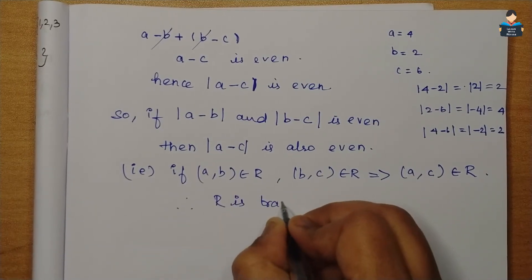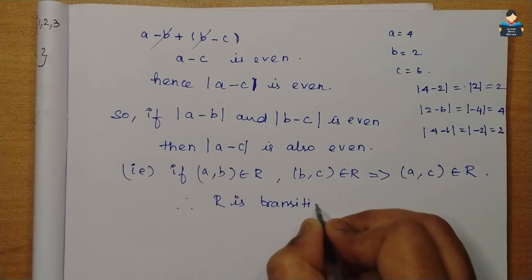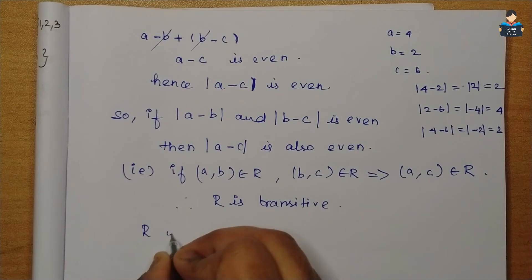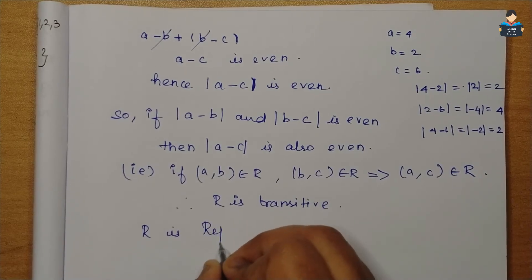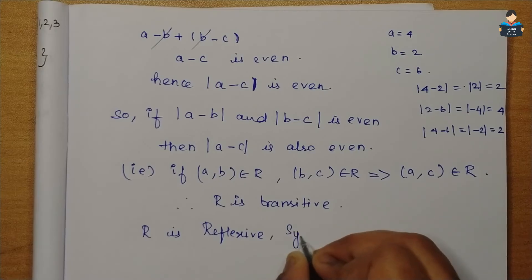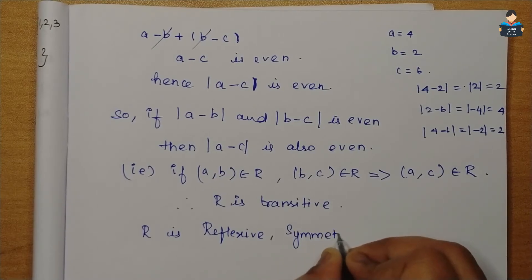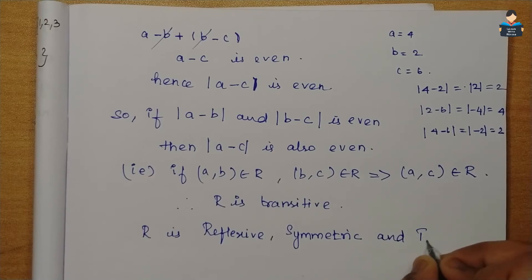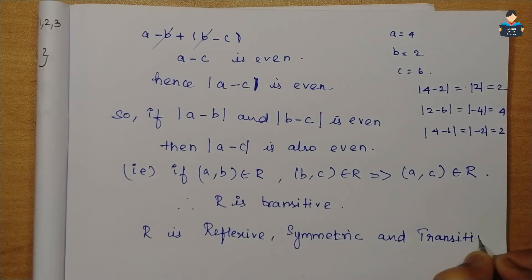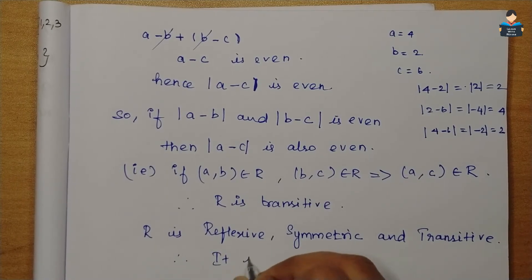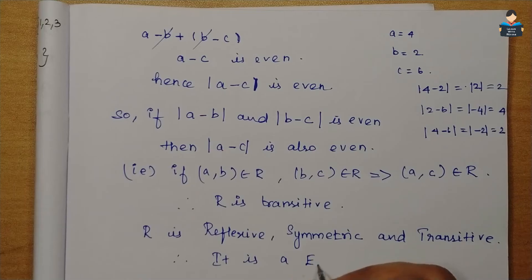Therefore, R is transitive. So R is reflexive, symmetric, and transitive. Therefore, R is an equivalence relation.